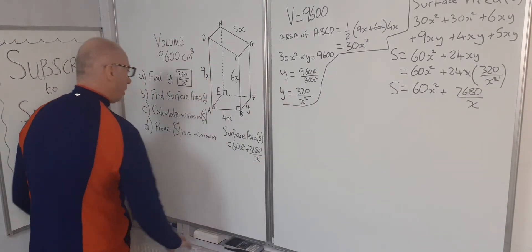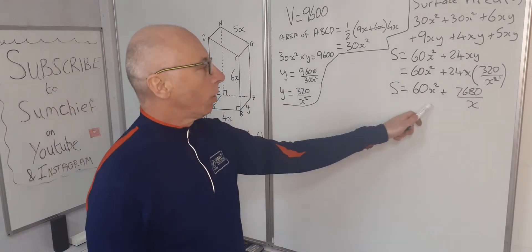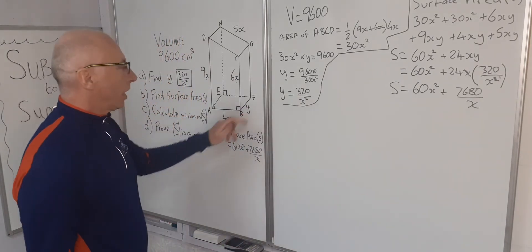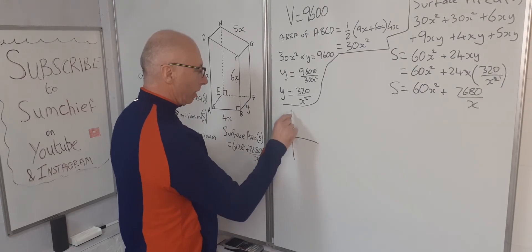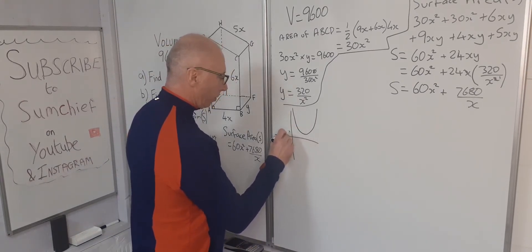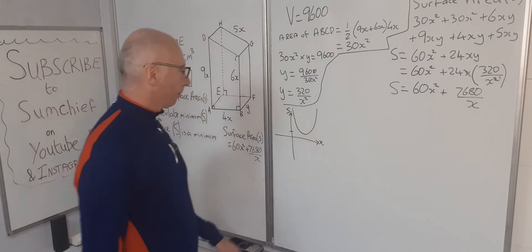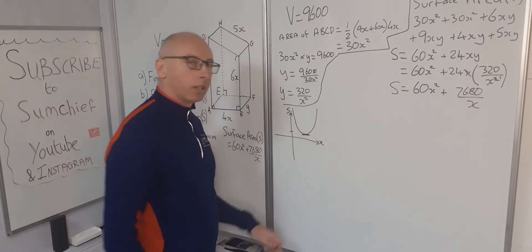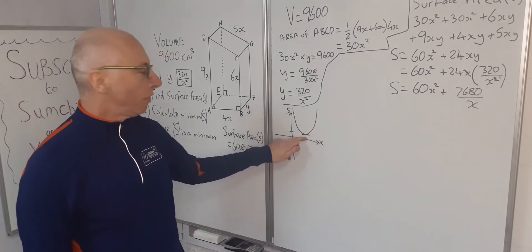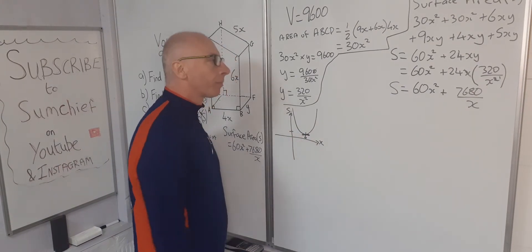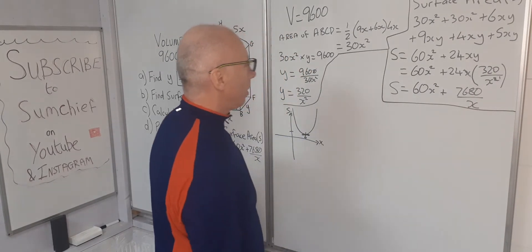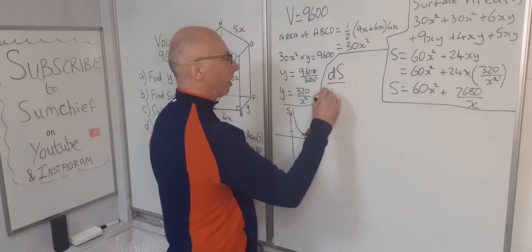Now we need to calculate the minimum value of S. Plotting S against x gives a curve with a minimum, and we need to find where that minimum occurs. To do that, we find the derivative of S and set it equal to zero — i.e., where the derivative is zero gives us the minimum value. So we want ds/dx.